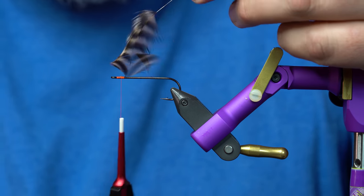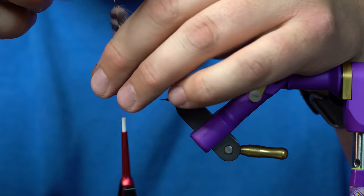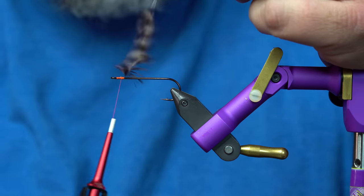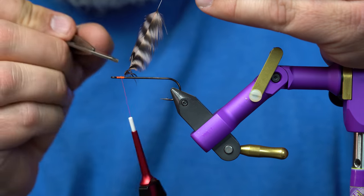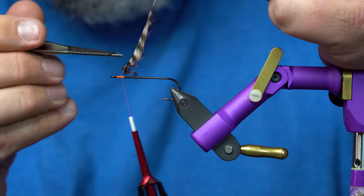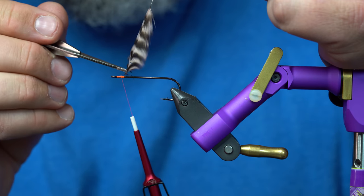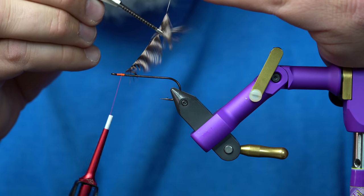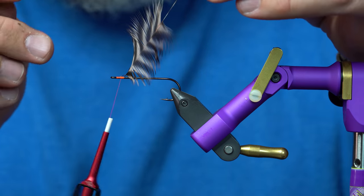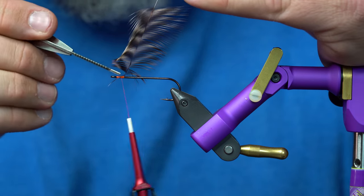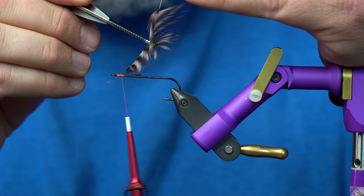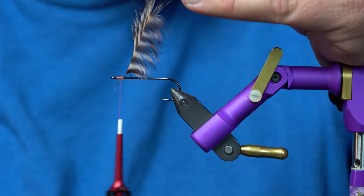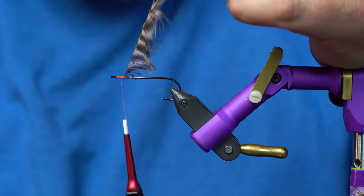I learned this when I started watching a bunch of the steelhead guys tie, but they always will crease the stem of their hackle so that as you wrap it the fibers flare back and it's not always the easiest to do that. So with this tool I can just put the hackle stem in the tool and run the tool up the feather and it will put a very slight crease in the feather. I can do that a few times and it starts to crease a little bit more and more each time. As you can see now the feather is nice and folded.